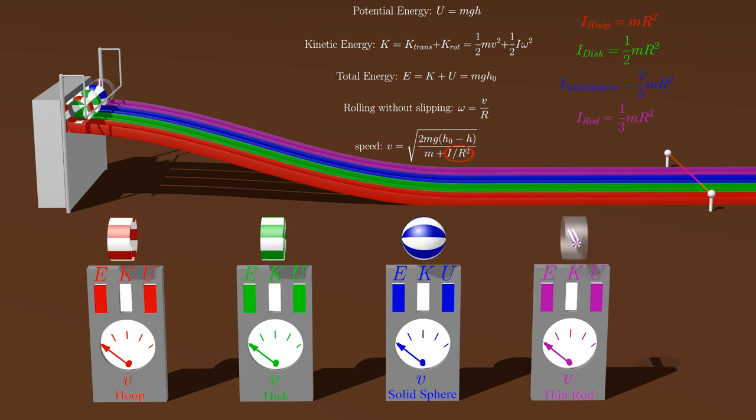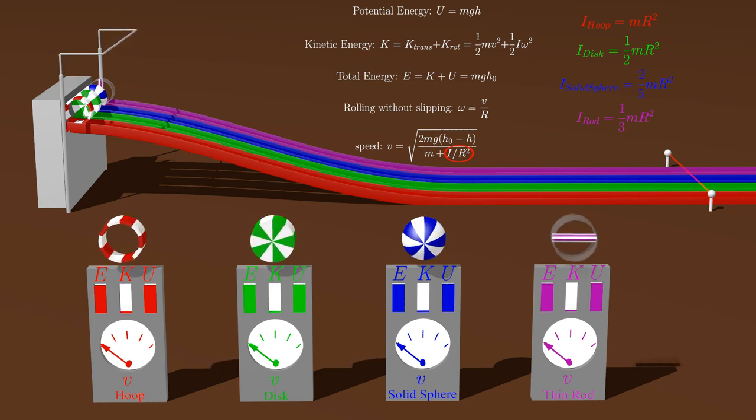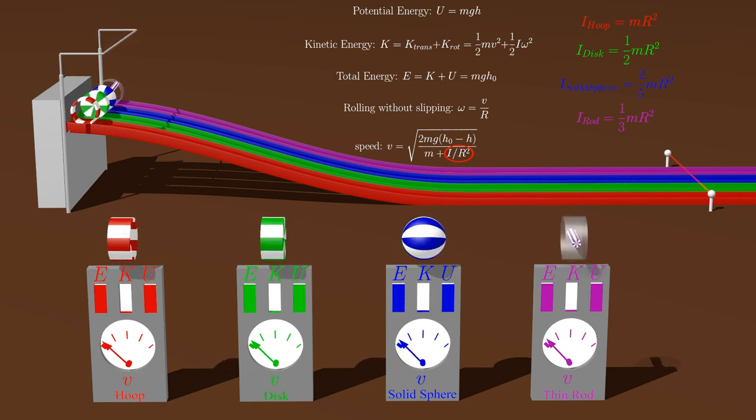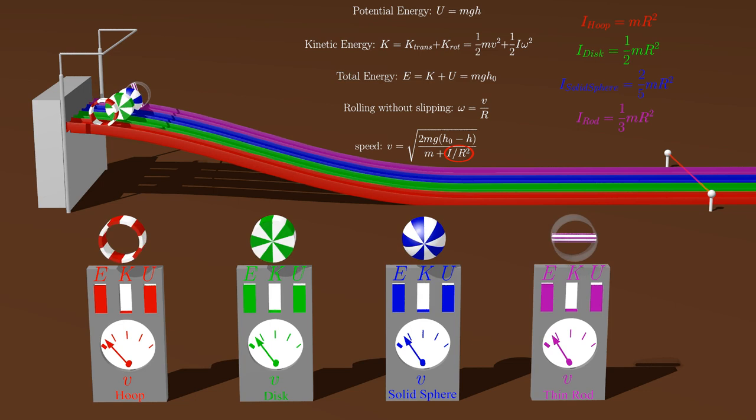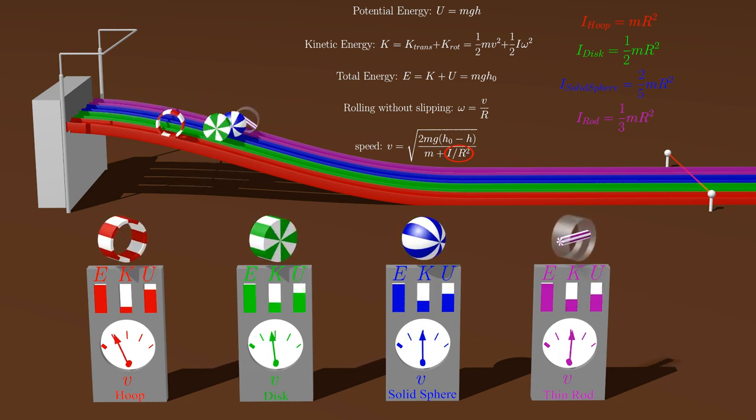Curiously, because the formula for the speed only depends upon the inertia divided by the radius squared, the race results would be the same even if the objects were different sizes, but had the same shapes.